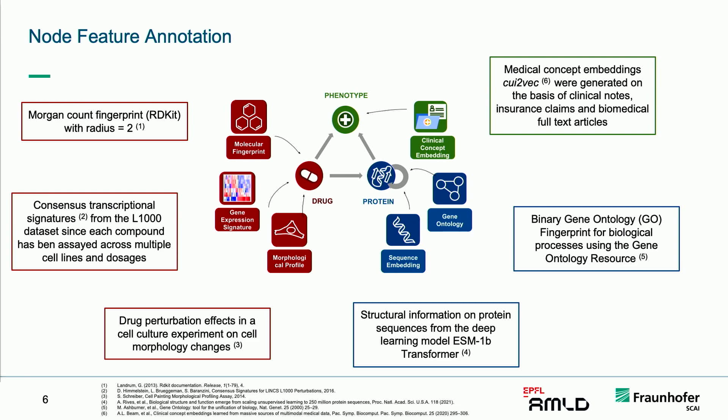We do not just want to use information on connectivity — what relations are out there. We want to enrich our knowledge graph. Usually graph-based approaches just focus on topology, so we decided to take additional information on the entities themselves into account. We have molecular fingerprints of the drugs, gene expression signatures, morphological profiles of drug perturbation experiments, protein sequence embeddings, a gene ontology fingerprint describing biological processes a protein is involved in, and clinical concept embeddings that leverage claims data and EHRs to better annotate phenotypes.